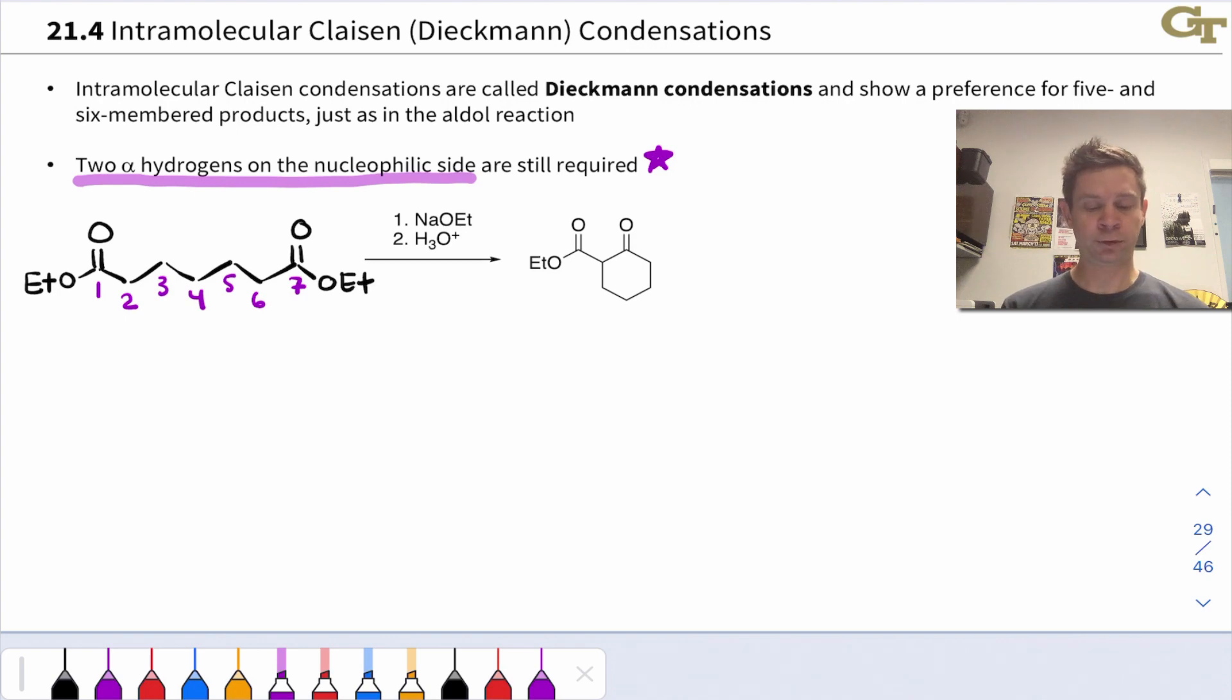And this first example shows reaction of a seven-carbon diester with two ester groups at carbon one and carbon seven. We want to make sure, as in the intermolecular Claisen, that this alkoxide matches the alkoxy groups of the two esters. And I've gone ahead and numbered the carbons so that we can see that this reaction involves the linkage of carbon two, the nucleophile, with carbon seven, the electrophile. Ethanol is a byproduct since one of the ethoxide groups leaves and is ultimately protonated on acidic workup.